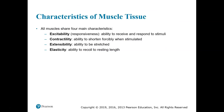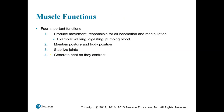All three muscle types are excitable, meaning they can receive and respond to stimuli. They can contract — that means they can shorten forcibly when stimulated. They are able to be stretched, which is the property called extensibility. And they are able to recoil to resting length, which is elasticity. Those are the characteristics shared by all three muscle tissue types.